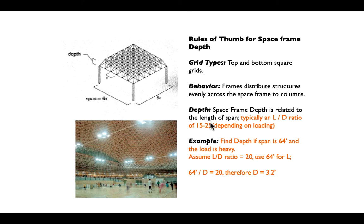You'll remember from our calculations with beams that the dead weight of the structure, especially at bigger and bigger spans, starts to add up and at some point becomes the controlling factor. Removing all of that dead weight from what would otherwise be a heavy roof slab gives us additional span, or it could give us additional loading capacity. For a 64-foot span, an average span-to-depth ratio of 20 gives us a depth of three and a half feet — very small compared with what we'd get with a simple one-way beam.